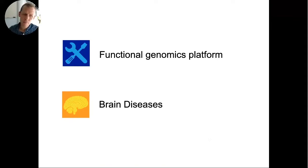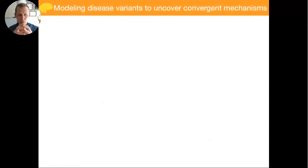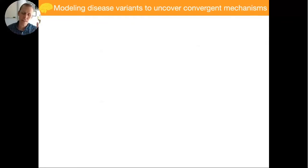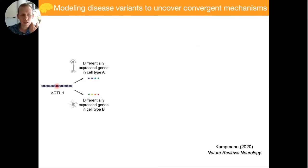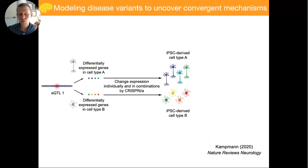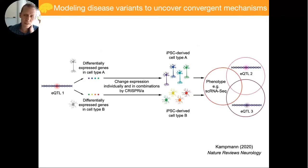Now let's look at how we can apply this platform to understand brain diseases and identify potential therapeutic targets. There are two major ways CRISPRi and CRISPRa can be used. One is to try to model disease variants in high throughput to uncover underlying mechanisms. Many GWAS hits are changes in non-coding areas of the genome thought to control expression levels of specific genes — so-called eQTLs. The problem is that an eQTL could be active in one cell type but not another, and sometimes it can affect the expression of several genes. CRISPRi and CRISPRa allow us to directly target those coding genes in different cell types to understand downstream phenotypes.